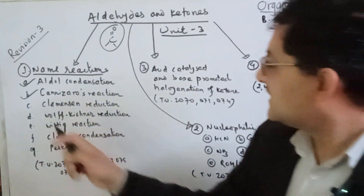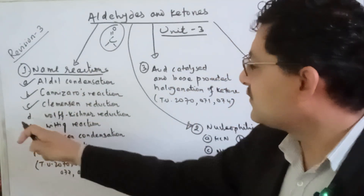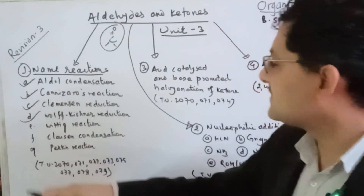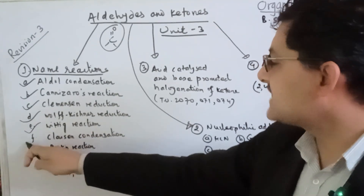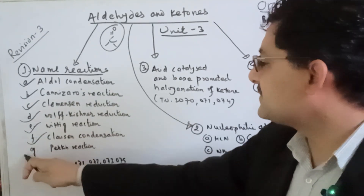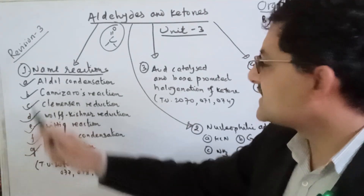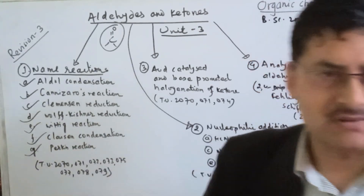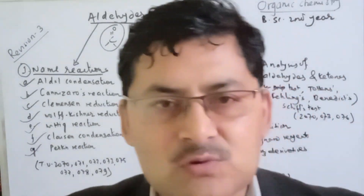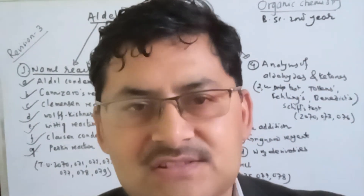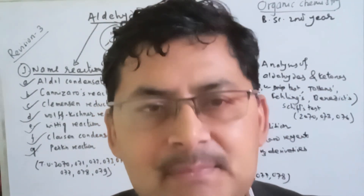There is also the Clemmensen reduction reaction, Wolf-Kishner reduction reaction, Wittig reaction, Claisen condensation, and Perkin reaction. There are seven named reactions in total, each different from the aldol condensation.